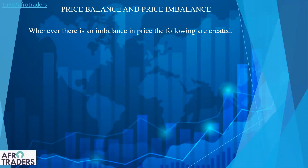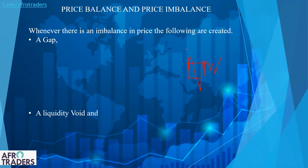When there's an imbalance, the following will occur. Going back to the example of the consolidation, the only reason why price will move from this range is when supply or demand becomes more. So there is going to be an injection of capital or orders. When those orders become more, one side becomes more than the other, then price will move out and start moving towards a certain direction. When this occurs, it is going to create the following: a gap, a liquidity void, or a fair value gap.